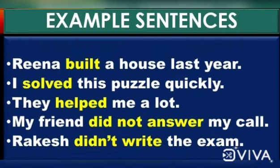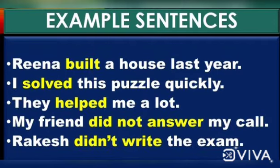In the first three sentences, we see the verb form is in simple past form. In the fourth and fifth sentences, we see that they are negative sentences — the verb is split into two. 'Did' is the helping verb and 'answer' is the main verb. So when the past form is split, we have 'did' plus the main verb.